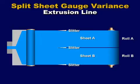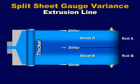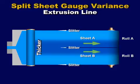In checking the sheet thickness, Quality Control found a slightly thicker band of plastic along the center line of the wide sheet. The thicker band on roll A is on the left side. On roll B, it is on the right side.